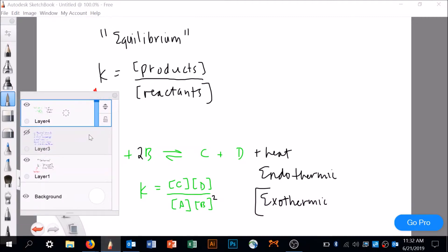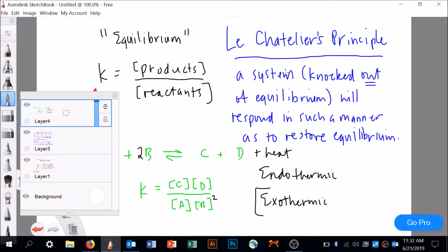Let me come over here. Le Chatelier's Principle is that a system that's perturbed or knocked out of equilibrium will respond in such a manner so as to restore equilibrium. If a system is perturbed or knocked out of equilibrium, it's going to respond in such a manner as to restore equilibrium.